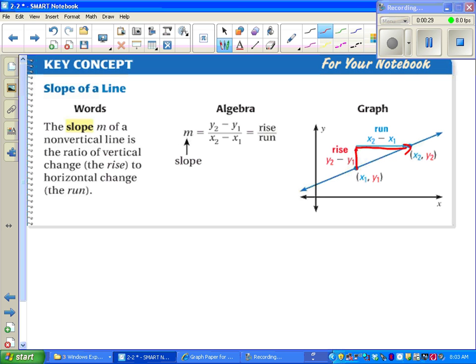If the line goes uphill from left to right, that means we have a positive slope. Downhill would be a negative slope.